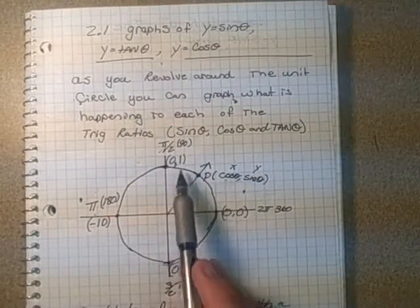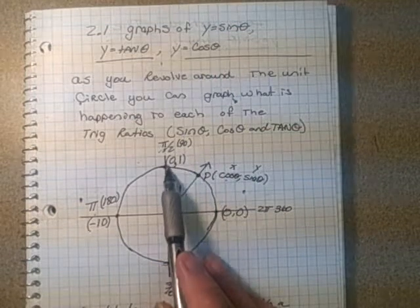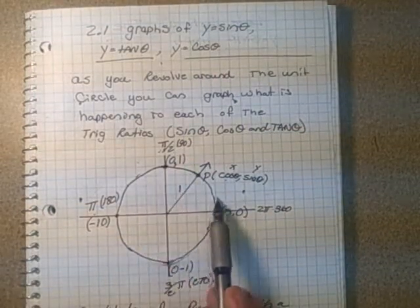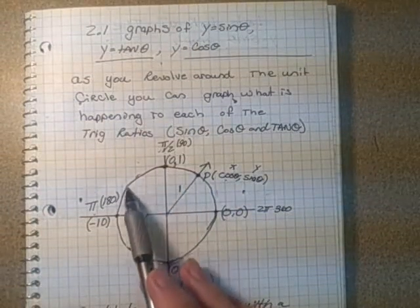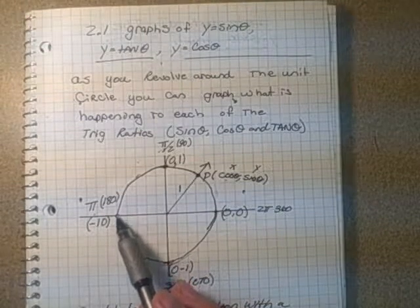Because sine is the y-coordinate, it becomes one at the top. Then it drops down evenly in the same shape until we reach 180 degrees or π radians.